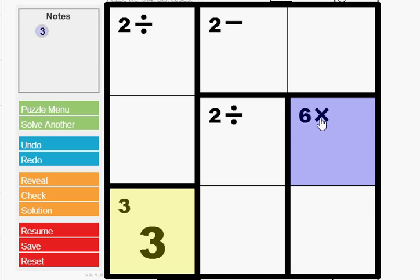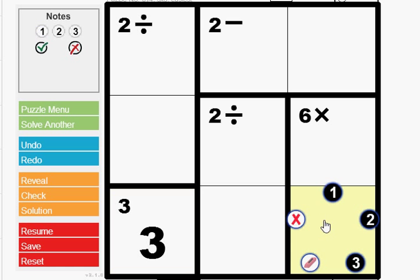There are two boxes, the operator is multiplication, and the target number is six. So we have to multiply two numbers to get six. How is it possible? It is possible only one way: two into three. Now, can I write three over here? No, because the rule says I cannot repeat the number in a row or column.